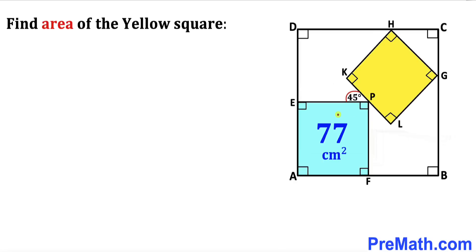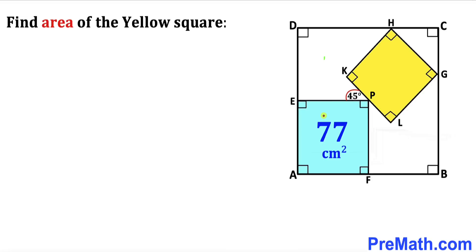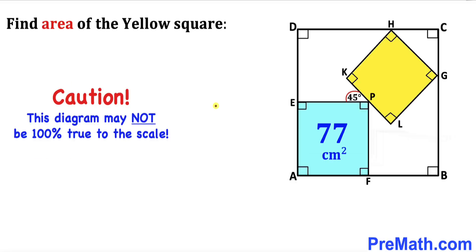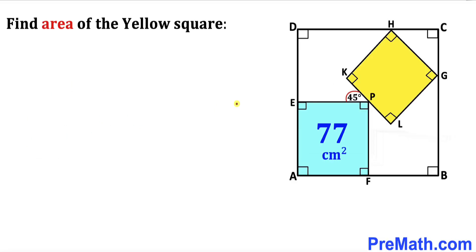Welcome to pre-math. In this video, this blue square along with this yellow square are fully confined in a big square ABCD, such that point P is their point of contact and they make an angle of 45 degrees. We are going to calculate the area of this yellow square. The area of this blue square is 77 centimeters square. Let's go ahead and get started with the solution.